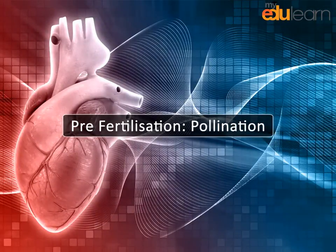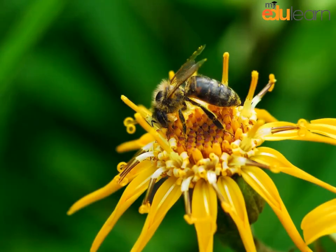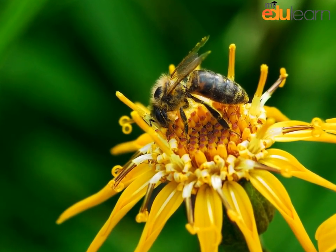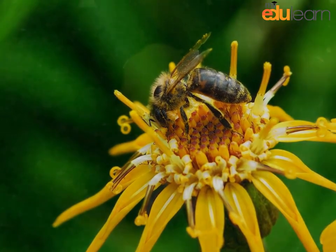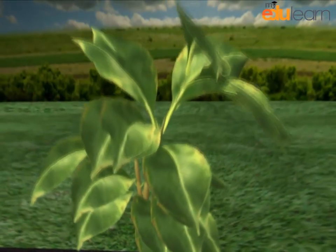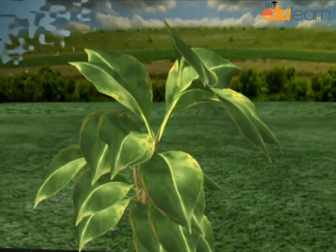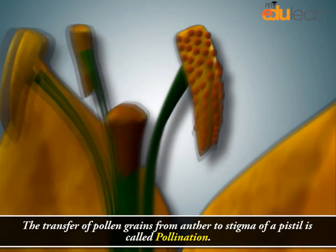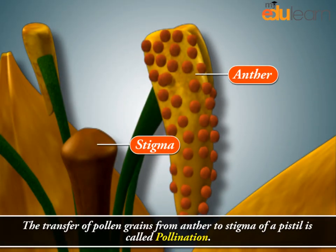Pre-fertilization: Pollination. Pollination is very important — it leads to the creation of new seeds that grow into new plants. The transfer of pollen grains from anther to stigma of a pistil is called pollination.